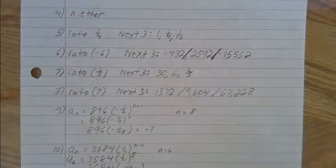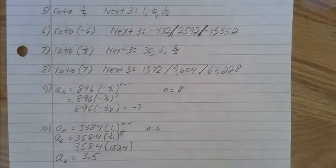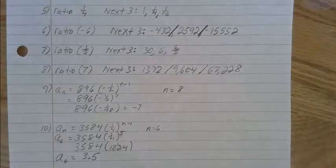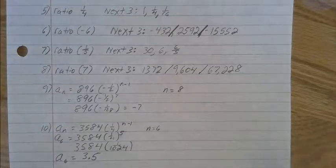When you get to number 9, notice it asked, or it didn't really ask, it just—what is the 8th term? So the 8th term is negative 7. Number 10: the 6th term is 3.5.